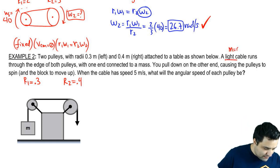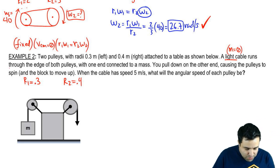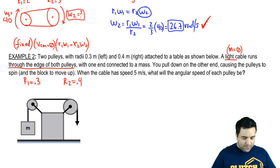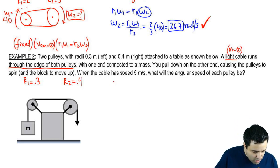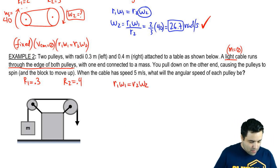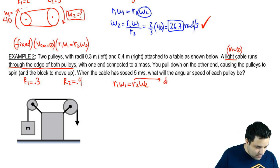Light means the cable has no mass. The equation for connected pulleys when they're fixed in place is R1 omega 1 equals R2 omega 2. So we're supposed to use R, which is the distance to center.